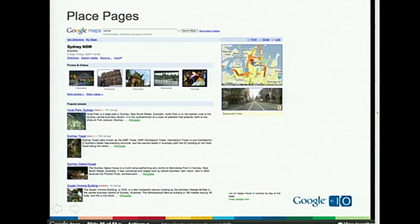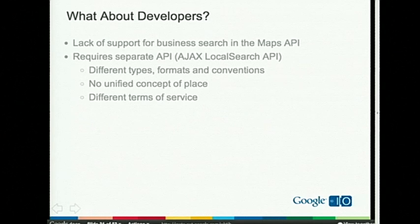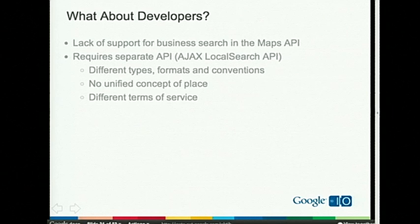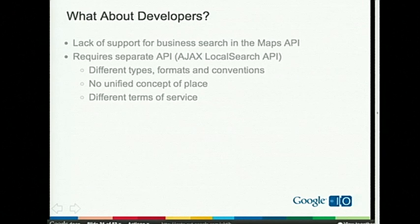We haven't been doing a great job for developers. We heard from developers that they miss a native API to do business search inside the Maps API. They're forced to use a separate API for local listing search, meaning different data types, different data formats, different programming conventions, and no unified concept of place — requiring separate logic for geocoded addresses versus business listings. It also means different terms of service, which can be a blocker especially for enterprise developers.